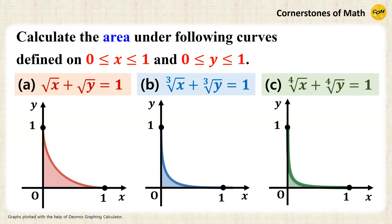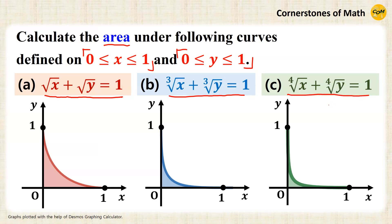Hello, and welcome to yet another video of Cornerstones of Math. Today, I will calculate the area under following curves defined on x from 0 to 1 and y from 0 to 1. The first curve is square root of x plus square root of y equals 1. The second one is cube root of x plus cube root of y equals 1. And the third one is fourth root of x plus fourth root of y equals 1. Alright, so let's get started.